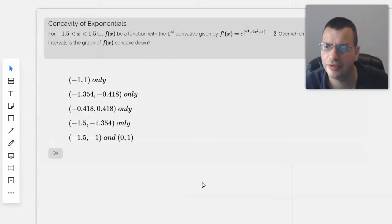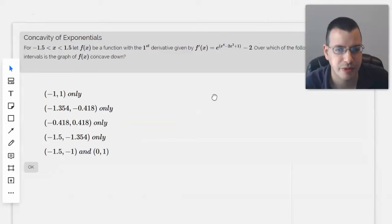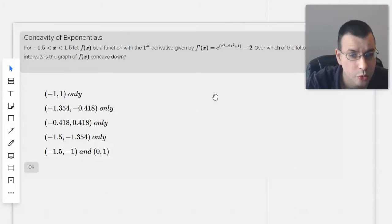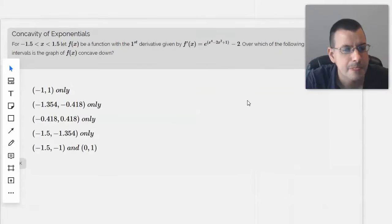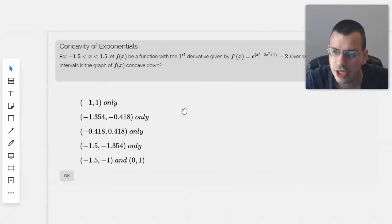For -1.5 < x < 1.5, let f(x) be a function with first derivative given by f'(x) equals... Over which of the following intervals is the graph of f(x) concave down?